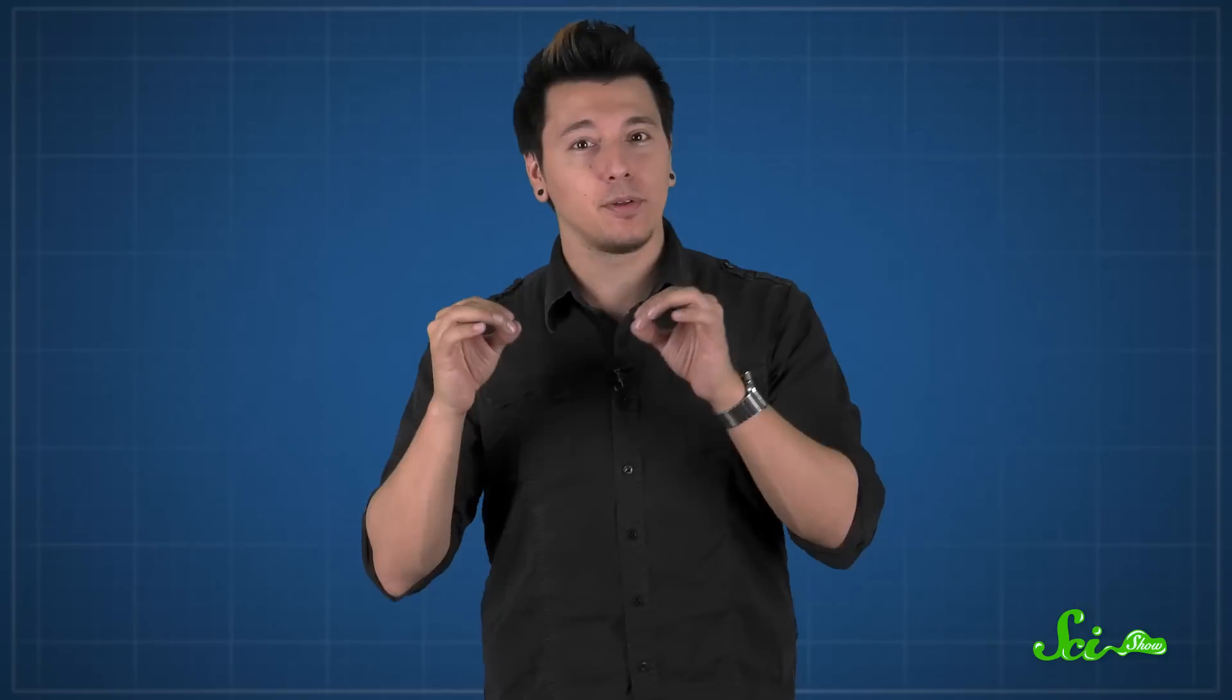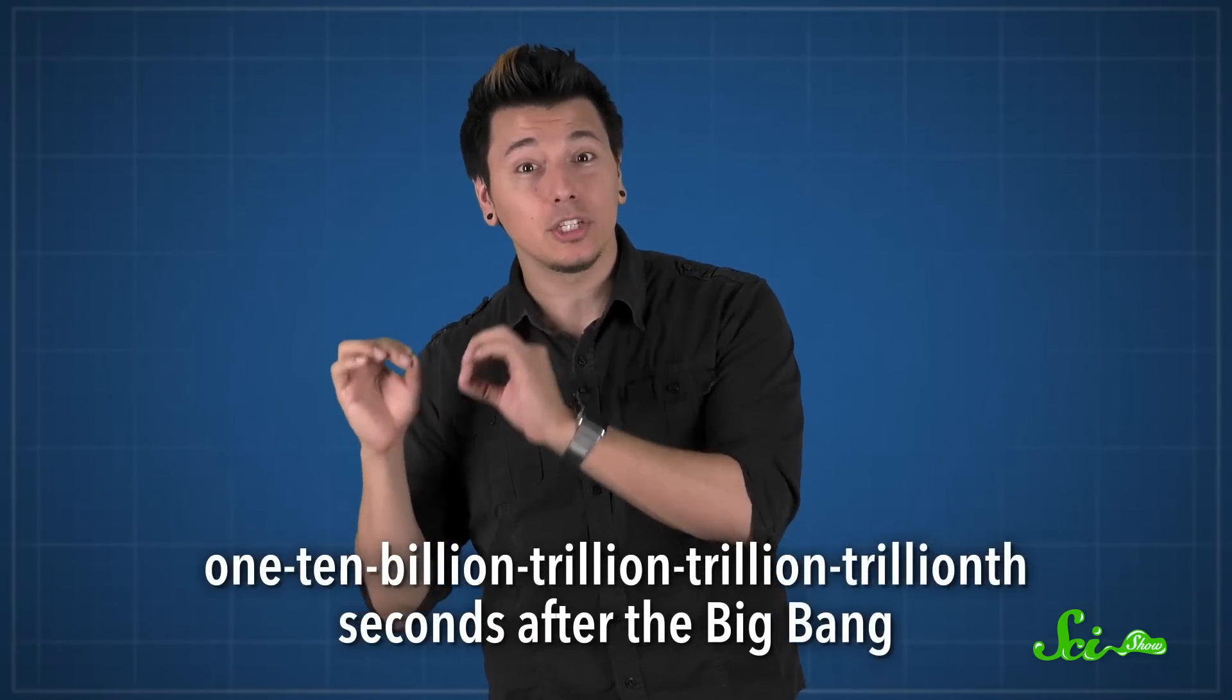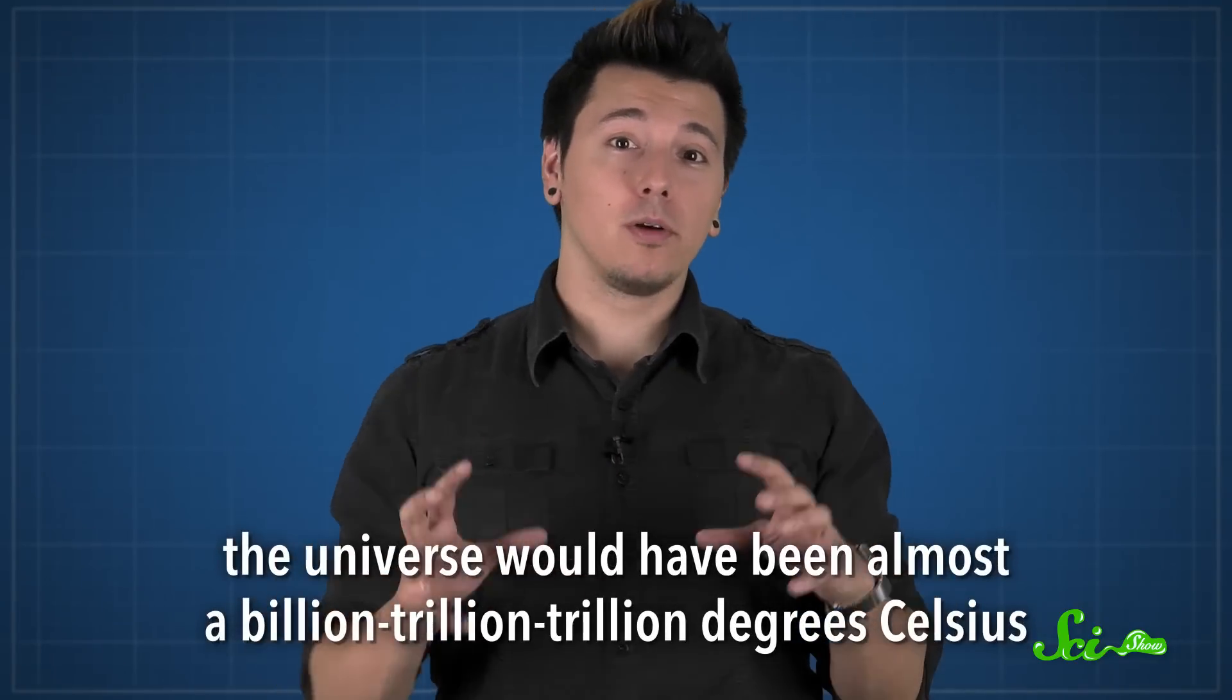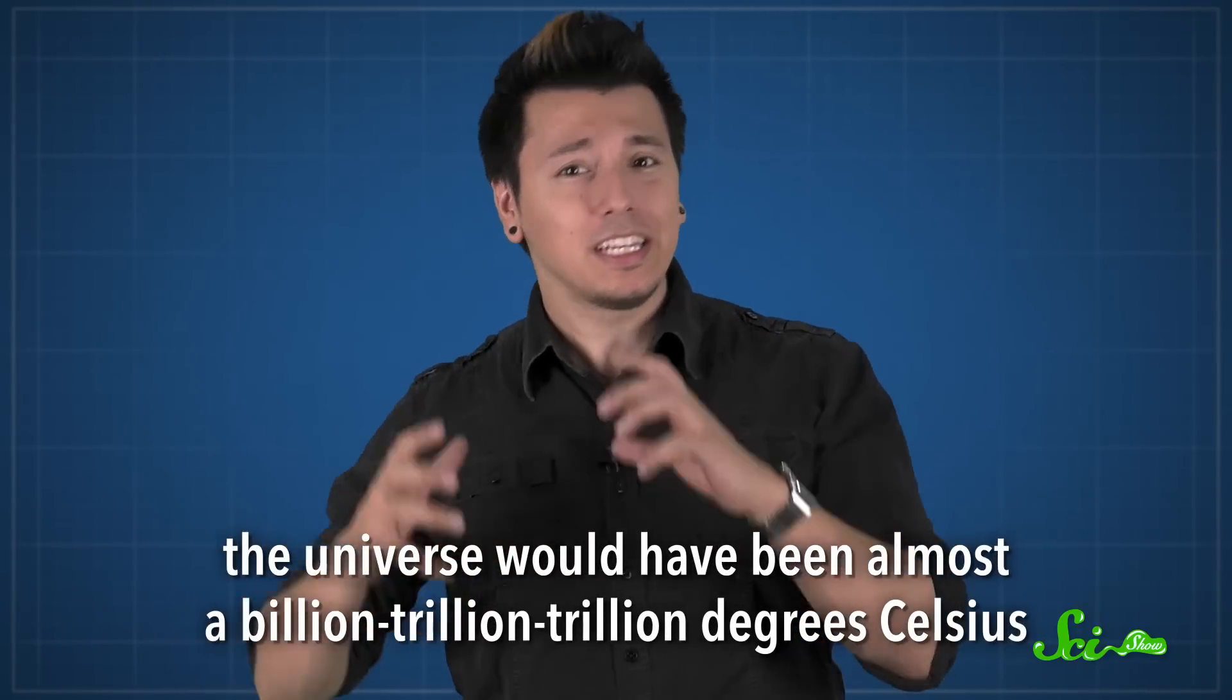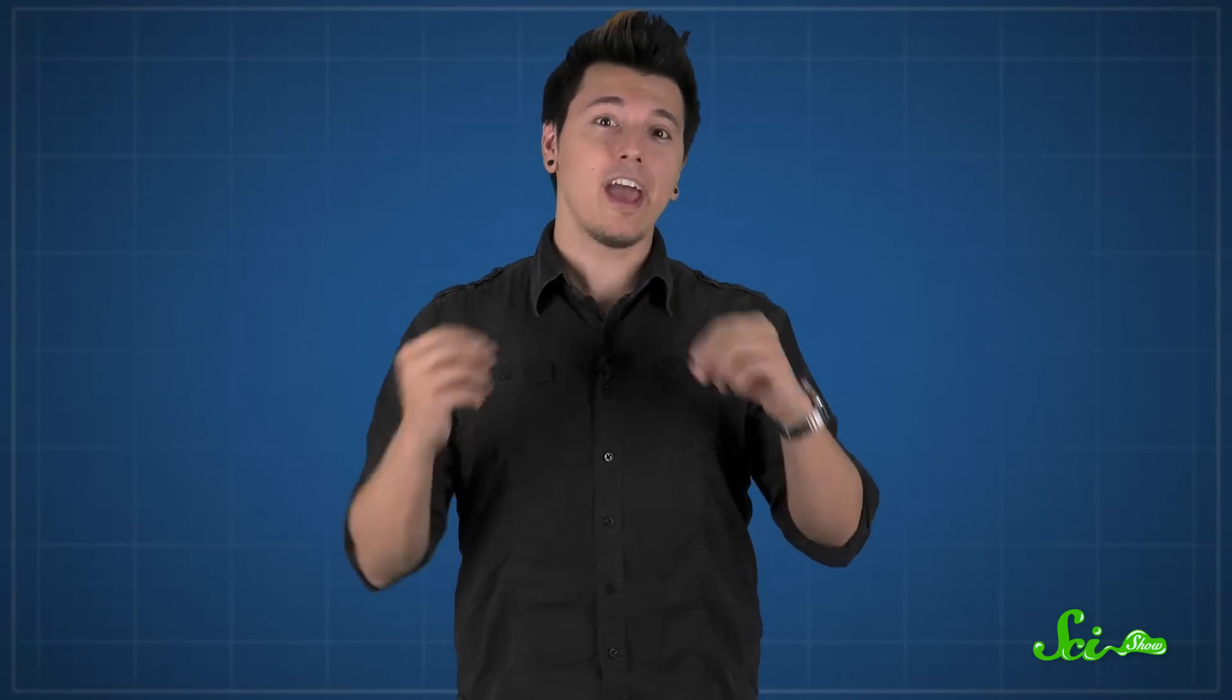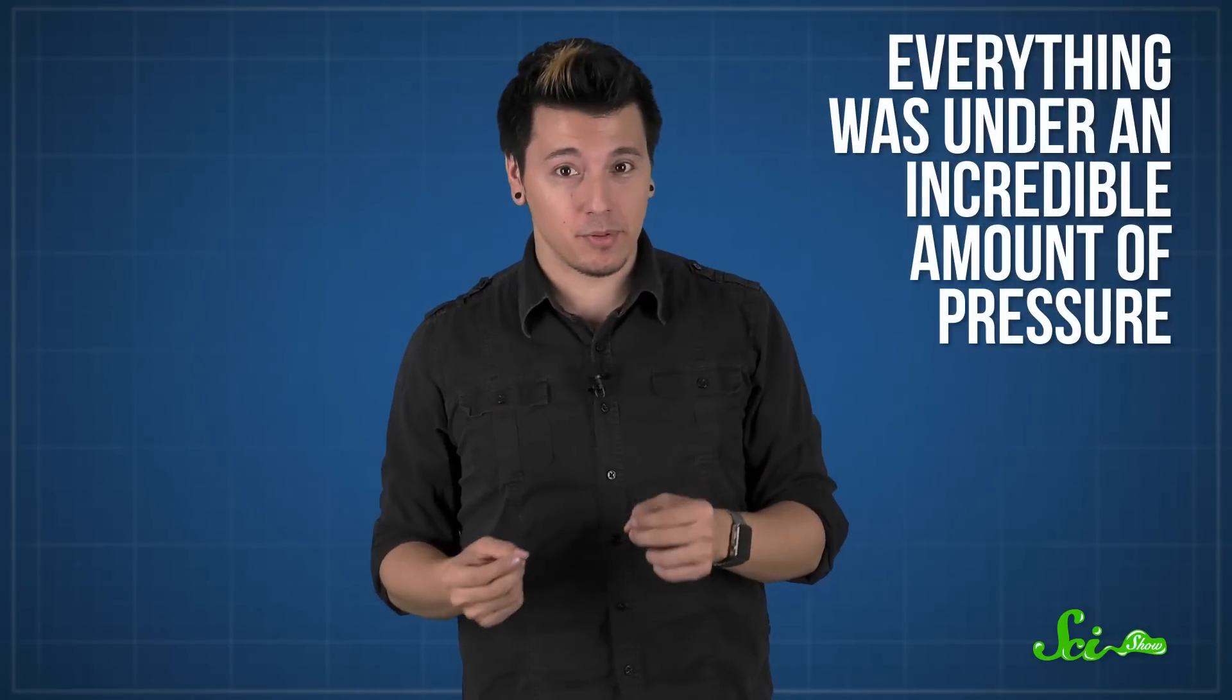Our laws of physics don't have an answer for what happened at that exact moment the universe was born. But we do have some guesses about what happened one ten billion trillion trillion trillionth seconds after the Big Bang. And in that tiny fraction of a second, the universe would have been almost a billion trillion trillion degrees Celsius. That's one followed by 32 zeros. It was probably so hot because all the matter and energy in the entire universe was crammed into one spot, meaning everything was under an incredible amount of pressure. And all of that pressure caused a ton of heat.